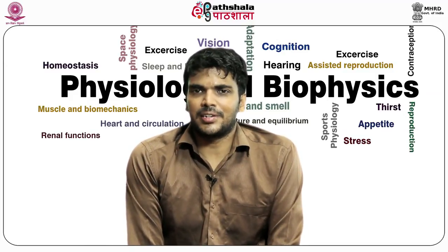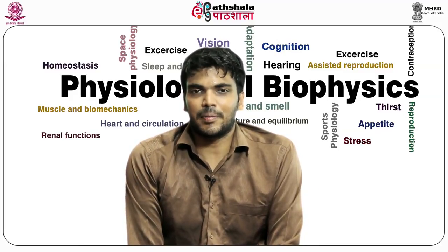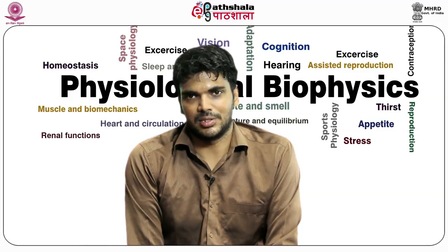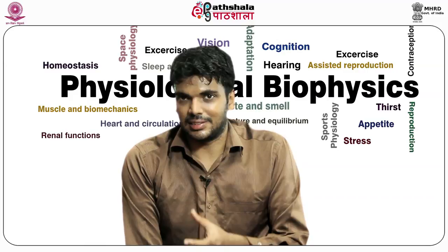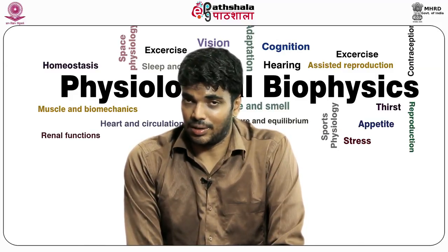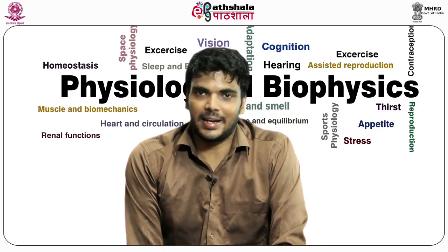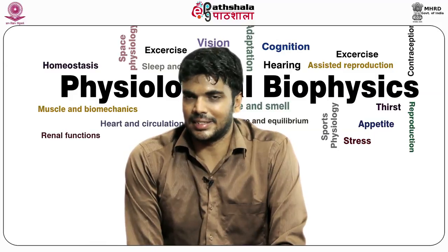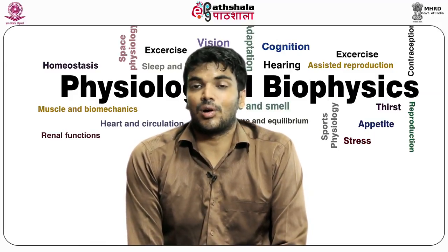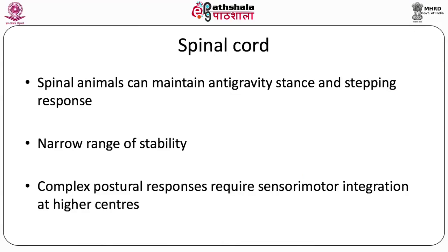In spinal organism preparations, the cranial neuraxis is transected — for example, at the thoracic spinal cord level to study lower limb postural control. A spinal animal was found capable of maintaining an upright stance due to residual tone and passive bone-to-bone forces, and could also produce stepping responses on a treadmill. This shows the spinal cord possesses basic circuitry for upright stance and locomotion.